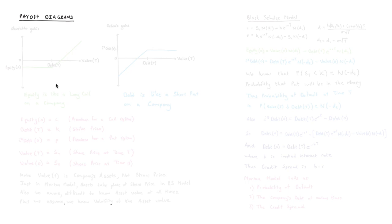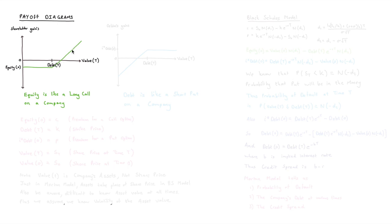If we draw the payoff diagrams, we see that equity is basically acting like a long call on the company. As soon as the company value is above the debt level, equity holders are in the money. When the company value is below the debt and the company is being liquidated, equity holders get nothing and lose their original investment, which you can think of as the premium for a long call.